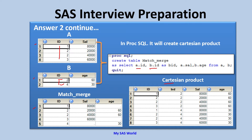I specifically mentioned b.id because there are different IDs here. We are not using any type of join — inner join, left join, right join — we are simply creating a Cartesian product. Automatic overlay does not happen in PROC SQL so I had to explicitly specify each variable. You can see these four observations from the first data set are merged with both observations of the second data set, giving us eight observations.